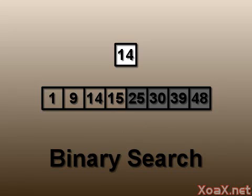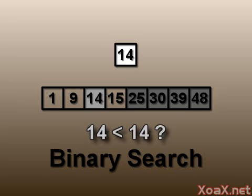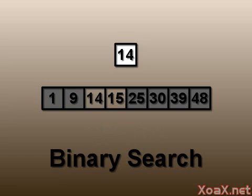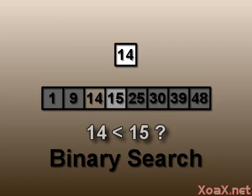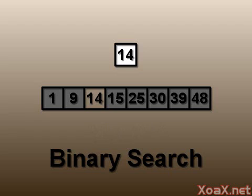The first four elements are the only viable possibilities now, so we compare the target to the middle element of those. In this case, we test to see whether 14 is less than 14. Since it isn't, we know that 14 isn't in the first two entries of the array. Notice that even though we are comparing the target to the element of the same value, we did not do an equality check, so the algorithm does not know at this point that the target value is in the third element. With just the third and fourth elements left as possibilities, we test the target against the middle value again. Our middle is always the larger of the two for an even set. Here, we test whether the target is less than 15. Since it is, we can eliminate that element. With only one element left, we test whether it is equal to the target and see that we have found our element.